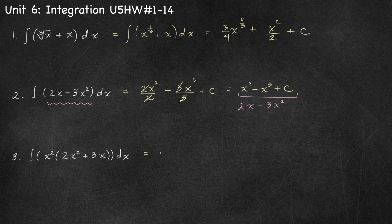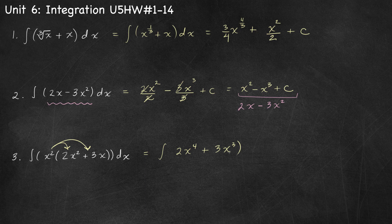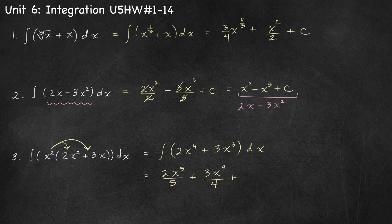Number 3, we're going to simplify this before we integrate it. I'm going to distribute the x squared: x squared times 2x squared is 2x to the power 4, plus x squared times 3x is 3x cubed. Now we're ready to integrate. The antiderivative of 2x to the fourth is 2x to the fifth over 5, plus 3x to the fourth over 4, plus c.